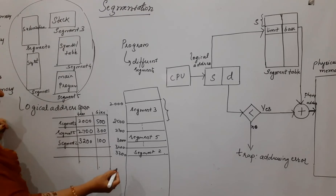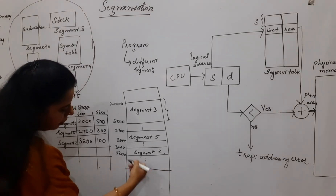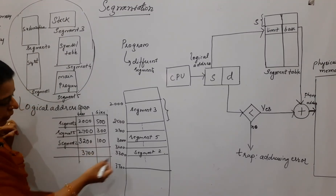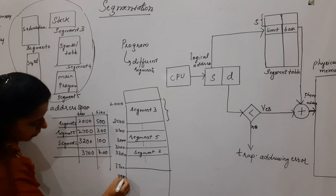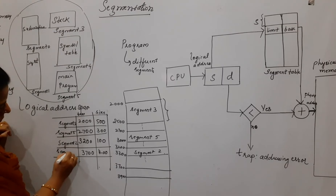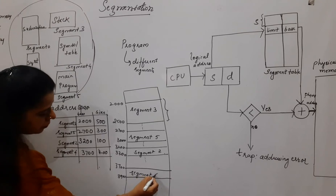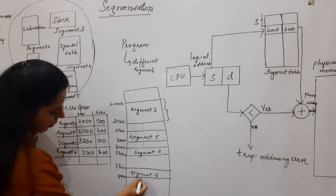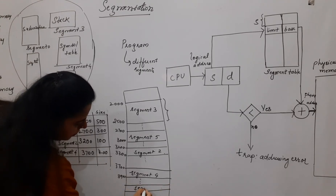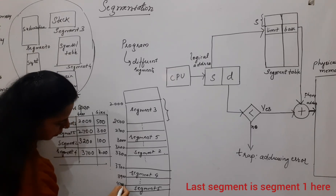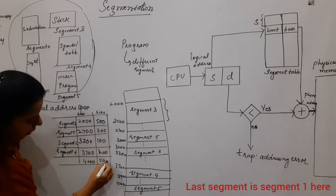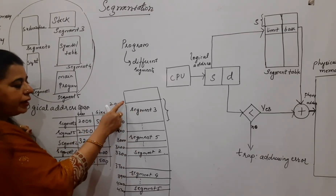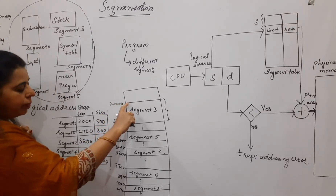Next, segment four starts at 3700. Then one more segment — let us say segment one — starts at 4200 with a size of 500, ending at 4700. Now, if I maintain the starting address and size of each segment, that becomes the segment table — similar to the page table from the previous session.